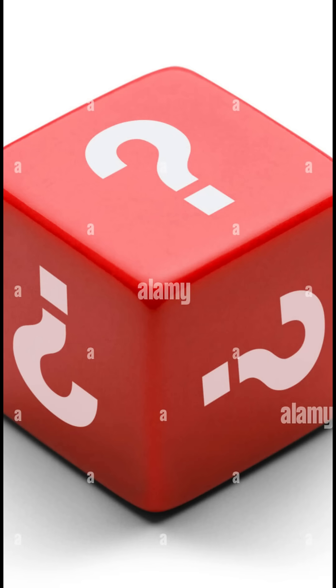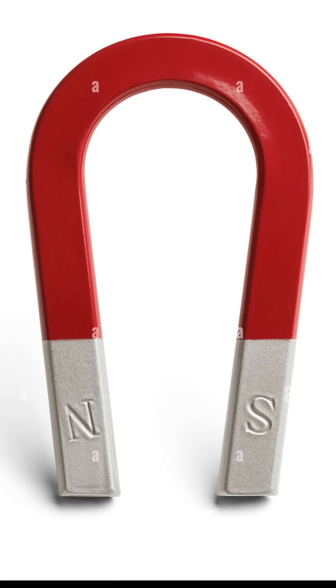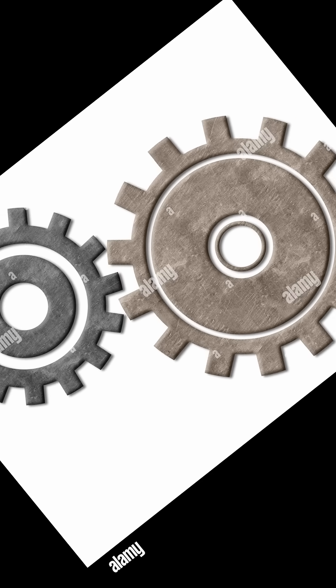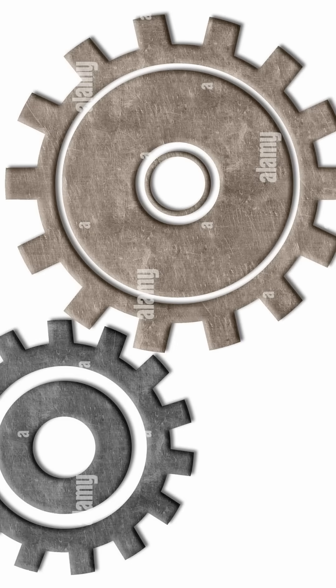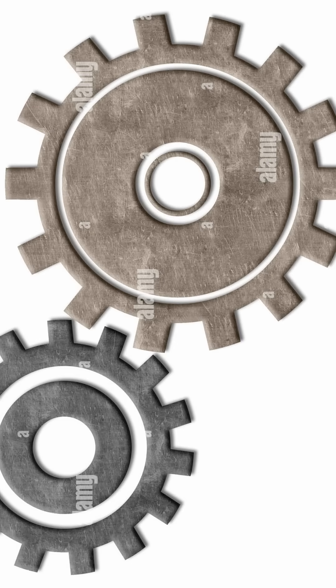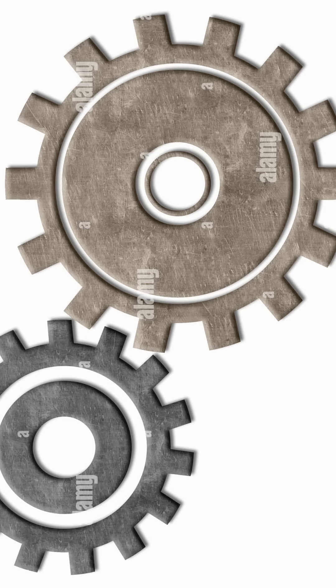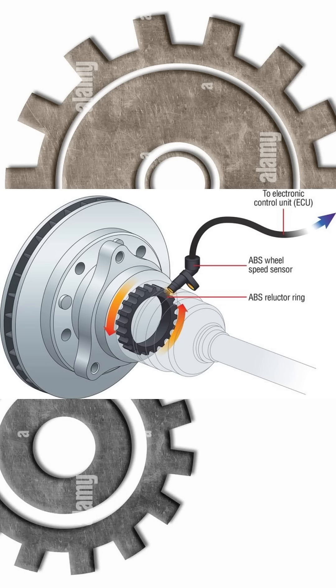Inductive sensors, on the other hand, use electromagnetic induction. As a metal object moves past, it creates a small electric current inside the sensor, which transforms into a sine wave. This type of sensor is typically used in ABS sensors.